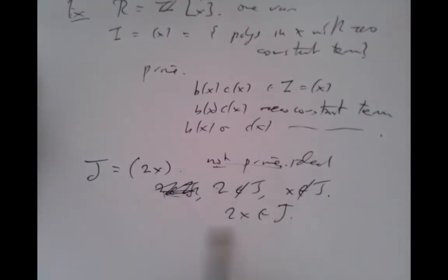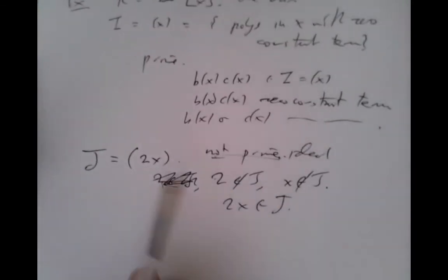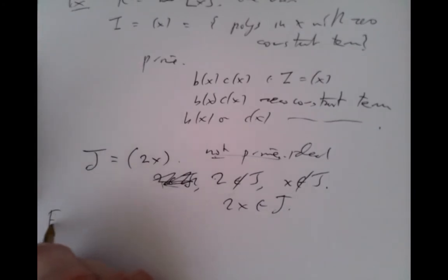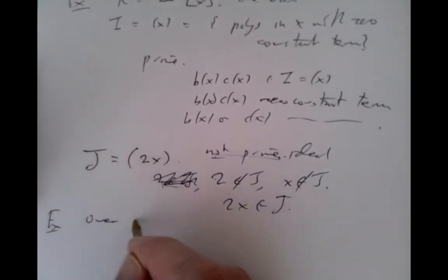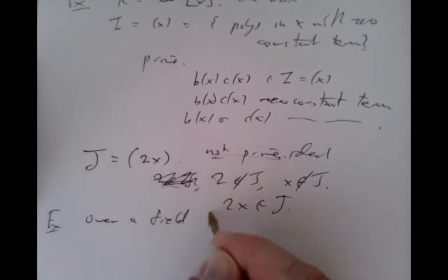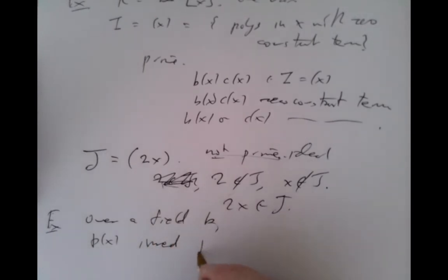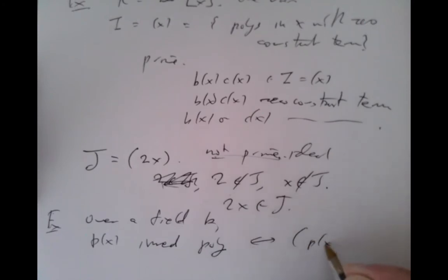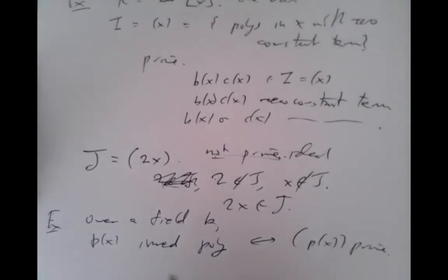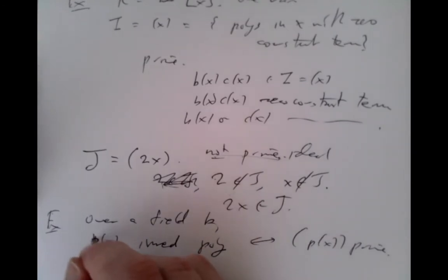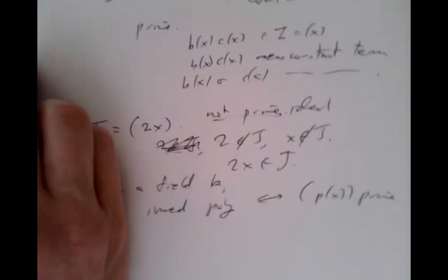This kind of issue doesn't happen when we have fields, because we can always scale a 2 to become a 1. Over a field k, a polynomial p(x) is irreducible if and only if the ideal generated by it is prime, because being irreducible says it doesn't factor. If it factored, you'd be able to take its factors, multiply them together to get in the ideal, without either factor already being in it.